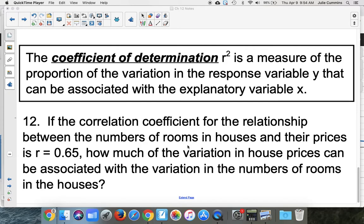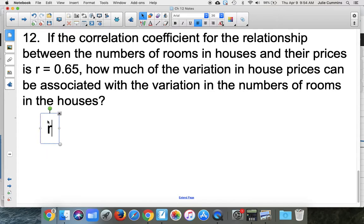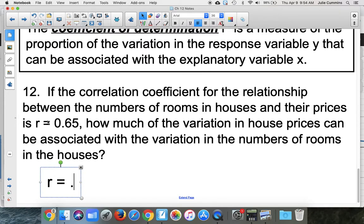So the question is, how much variation in house prices can be associated with the variation in the numbers of rooms? To answer this question, we need to look at that r value. We know that r is 0.65.